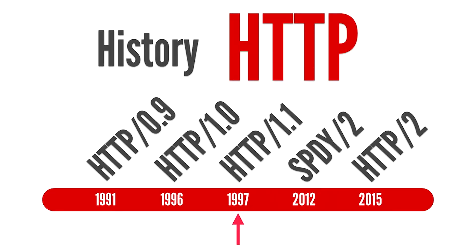Let's do some history catch-up on HTTP. The first documented version of HTTP was around 1991. HTTP is essentially a protocol that was built on top of TCP, otherwise known as Transmission Control Protocol, which is the low-level protocol used to transfer information across the internet.